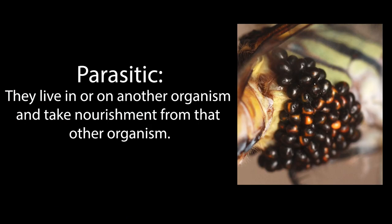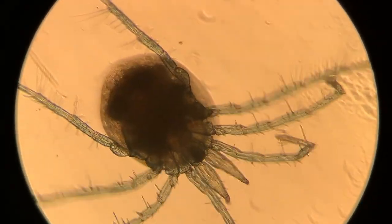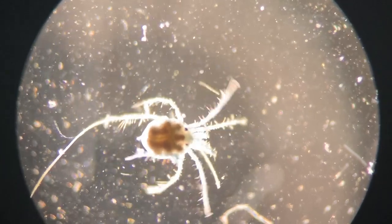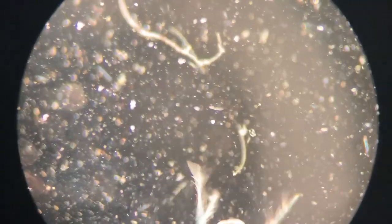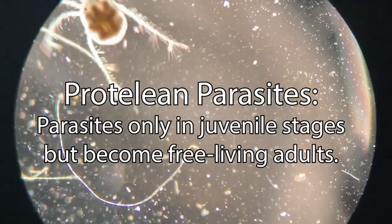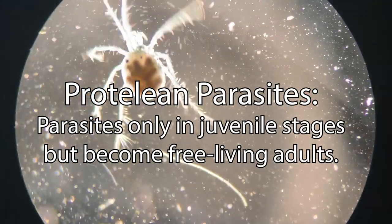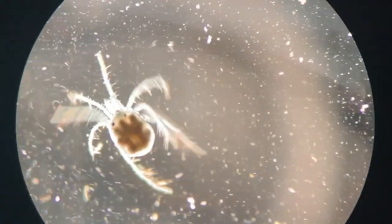Water mites are parasitic; however, the larval stage is the only life cycle stage to have parasitic relationships with other organisms — and these organisms are not humans. The fact that water mites are only parasitic during their larval stage makes them protellian parasites, meaning the larvae are parasitic while the adults are predatory.